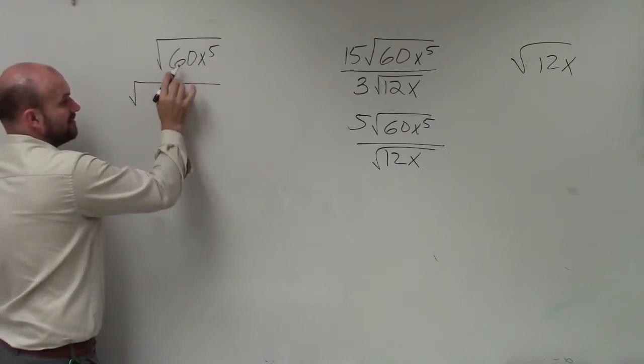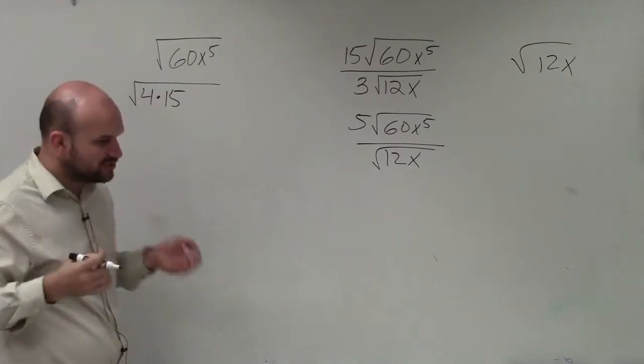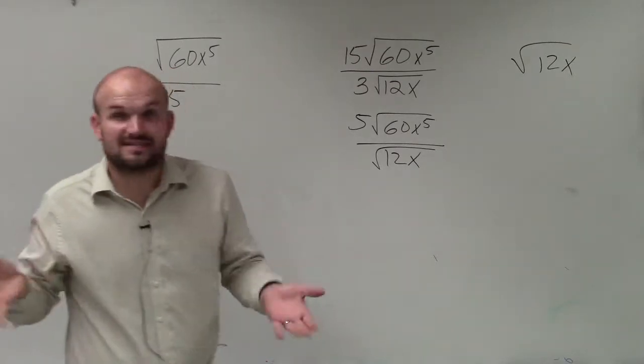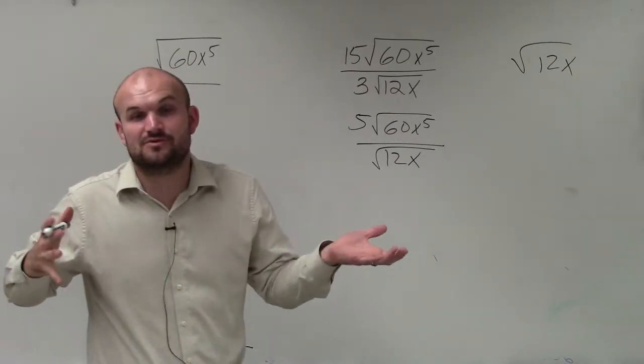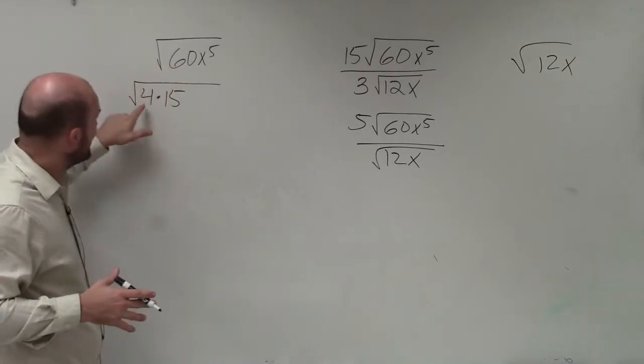So here, I can rewrite 60 as 4 times 15. And I had to choose, I could also do 6 times 10, right? But 6 is not a square number, nor is 10 a square number. However, 4 is a square number, and I can take the square root of 4. So that's why it's very important to choose your square numbers.